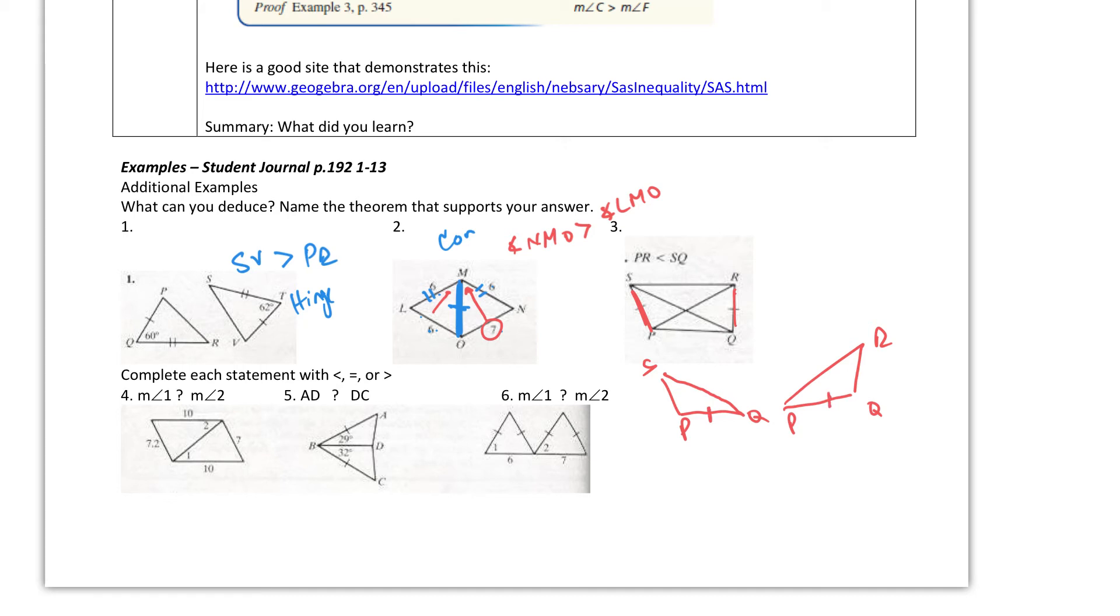And then I know that PR, this one, is smaller than SQ, that one, since this is the bigger side, and I'm told that this is the same as—I should have labeled these two as well, right here—that means angle P will be greater, this angle P will be greater than angle Q.